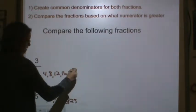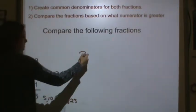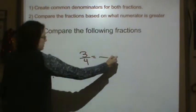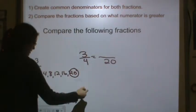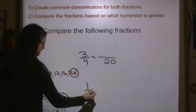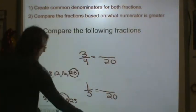It's 20, so I now need to set up to make an equivalent fraction. 3/4 is equal to something over 20, and 1/5 is equal to something over 20. Now let's multiply.